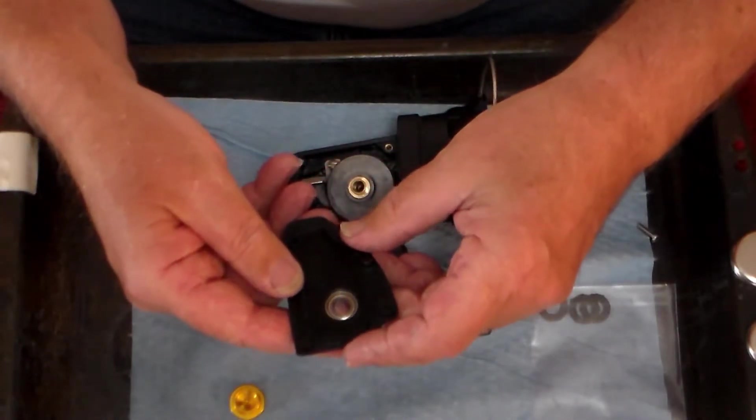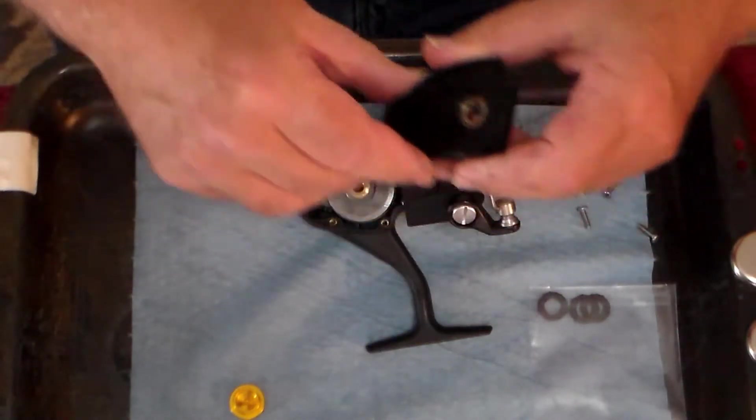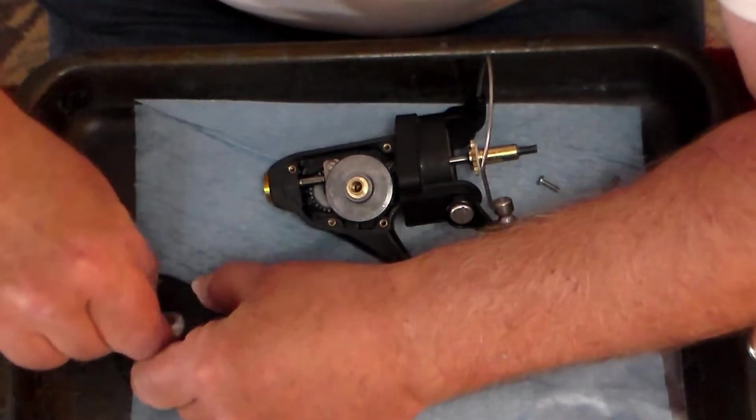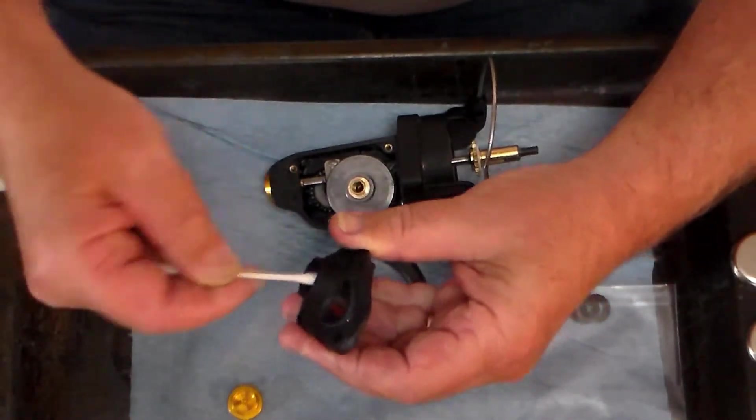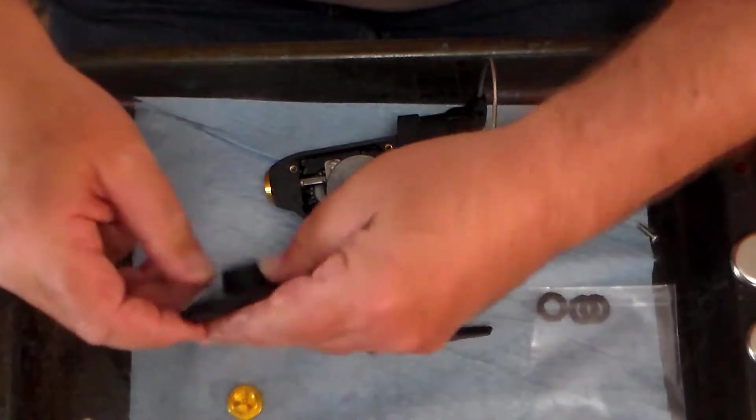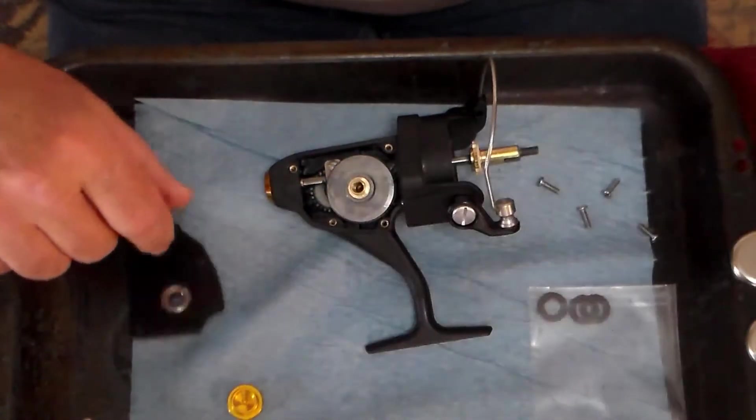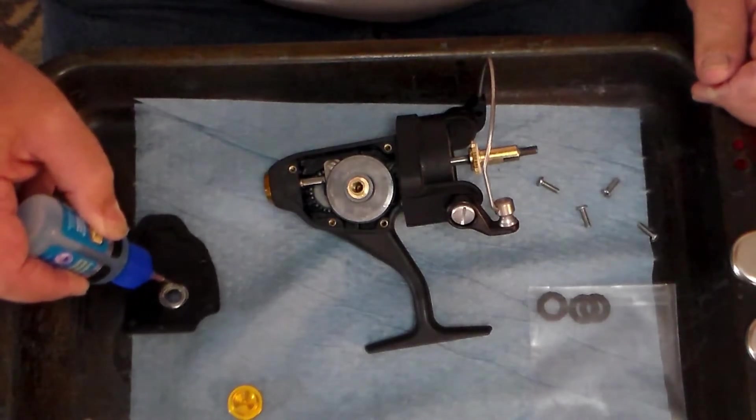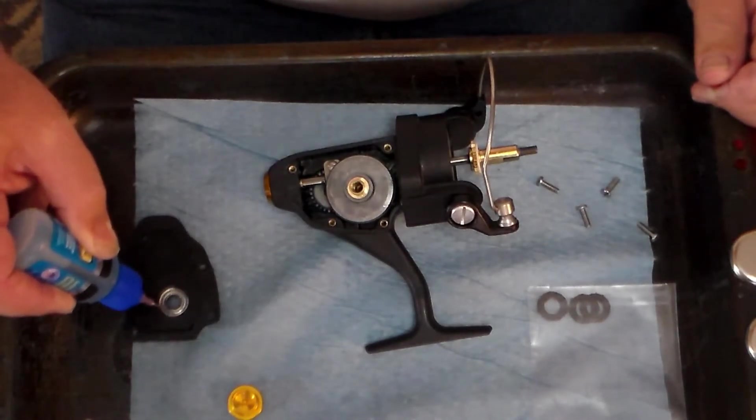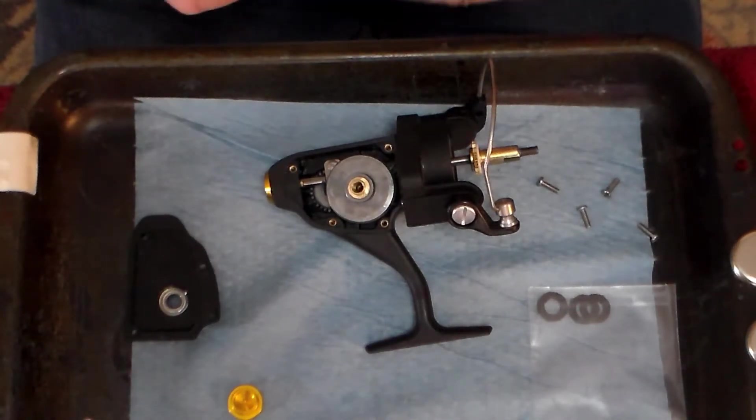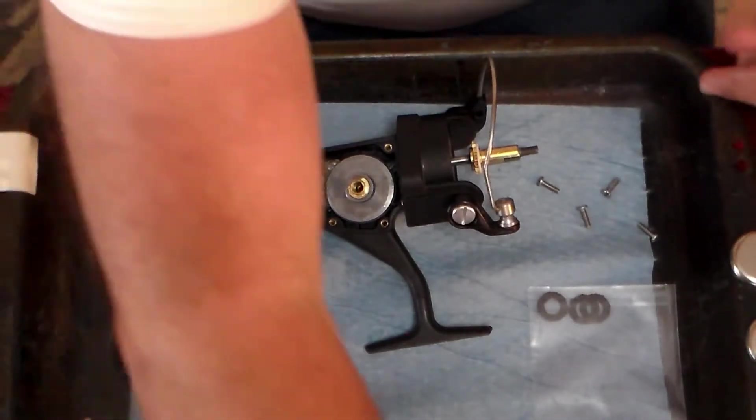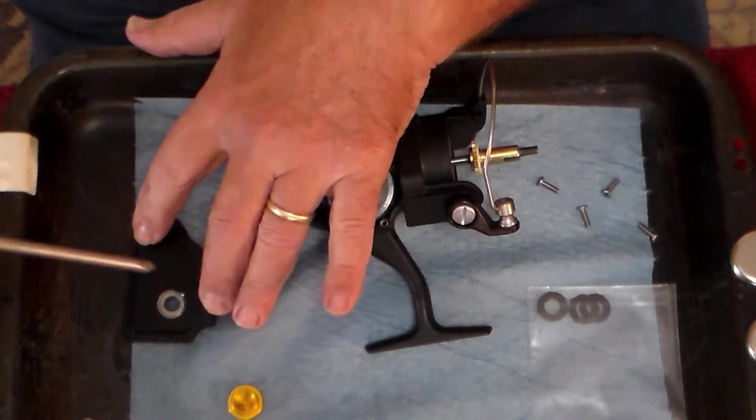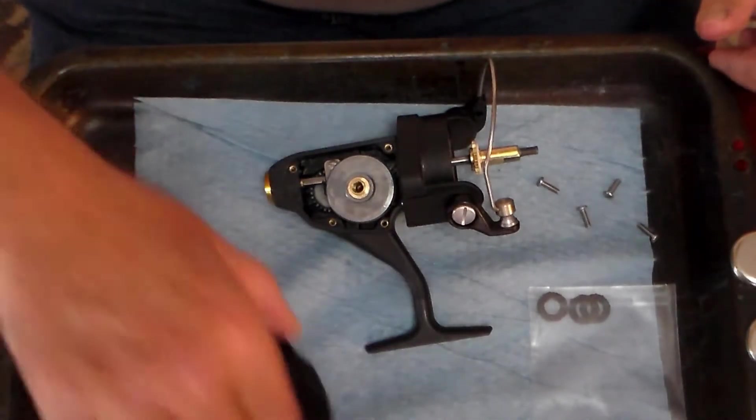All right, with those four screws removed, we can now remove the side cover. The bearing is still there. The bearing is in good shape, but we're going to go ahead and wipe it out. We've got any dust and debris that might be in there, which is pretty obvious. It looks like I didn't do that last time around.